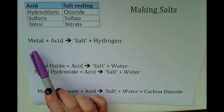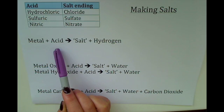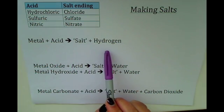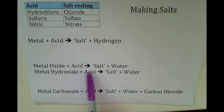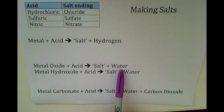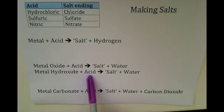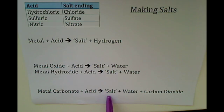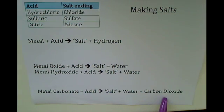In this example you've got a metal reacting with an acid, which makes a salt plus hydrogen. A metal oxide plus an acid makes a salt plus water, and a metal hydroxide plus acid also makes a salt plus water. Finally, a metal carbonate plus acid will make a salt plus carbon dioxide.